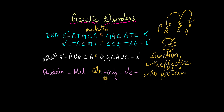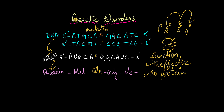Such instances where there is a change in the DNA sequence, because of which there is a change in the mRNA sequence, because of which the protein sequence has changed, cause genetic disorders. They are known as genetic disorders because these are changes that occur at the genetic level within the DNA of an individual.